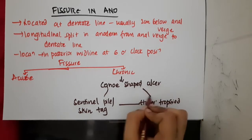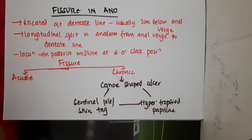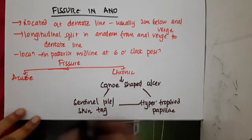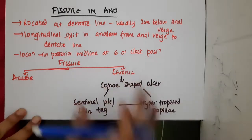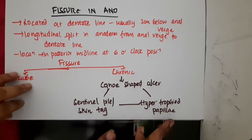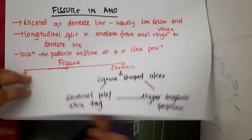So to summarize, in chronic fissure in ano, you will see canoe-shaped ulcers, sentinel pile or skin tags, and hypertrophied papillae.